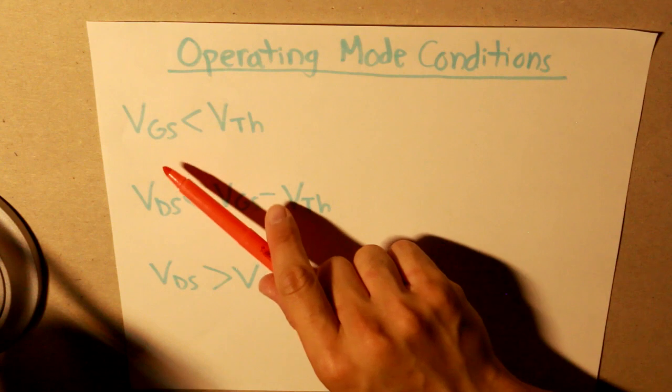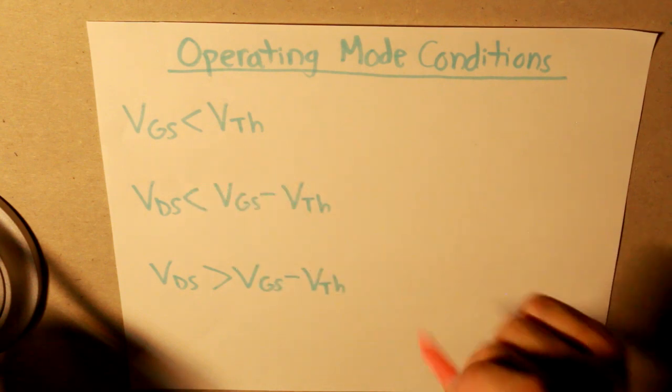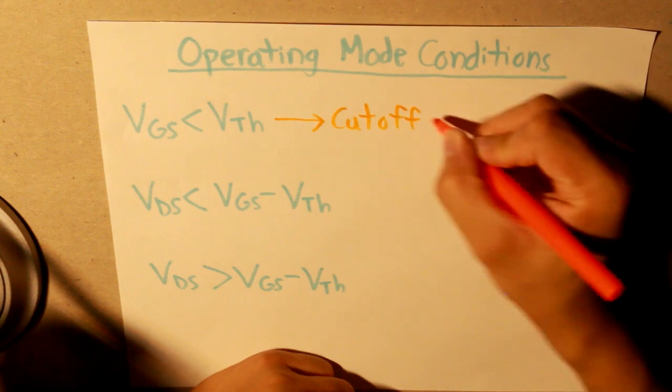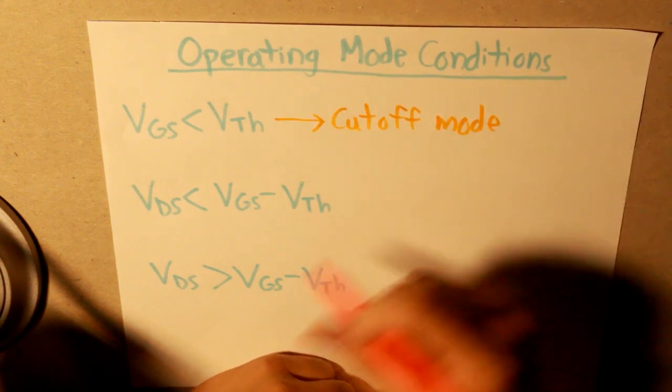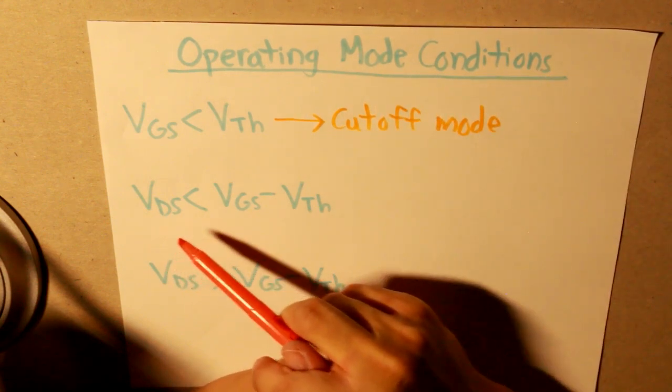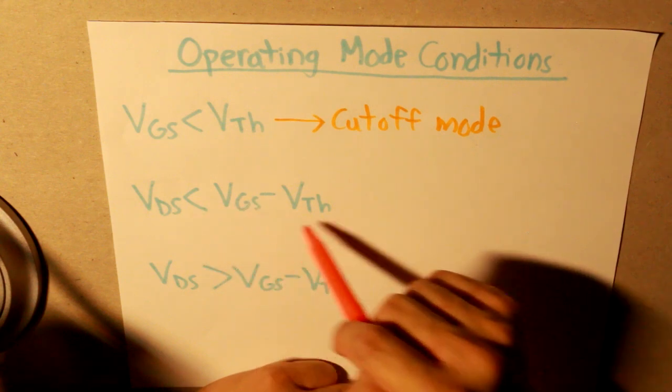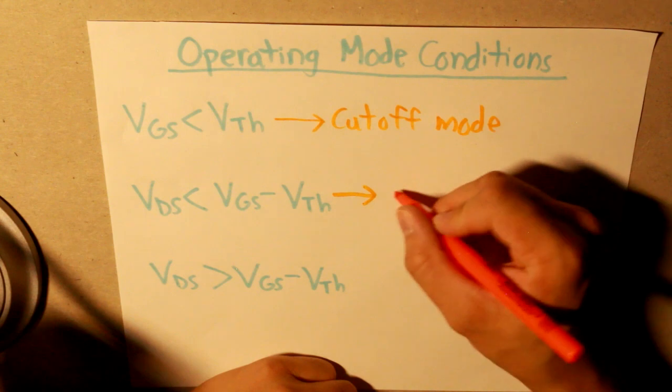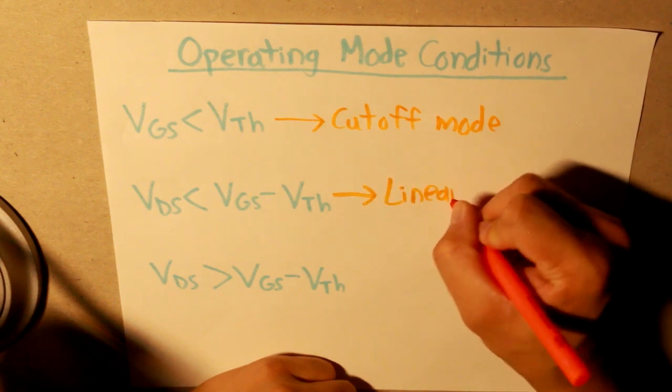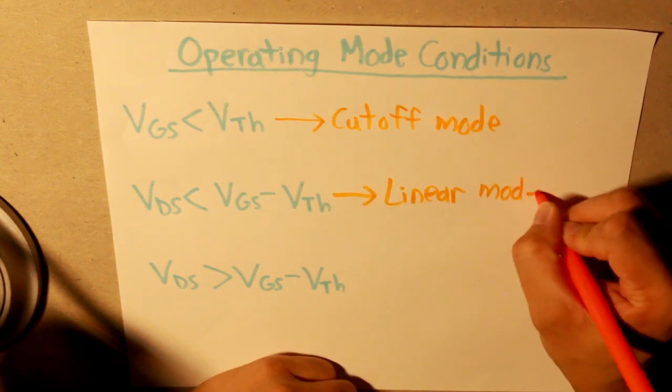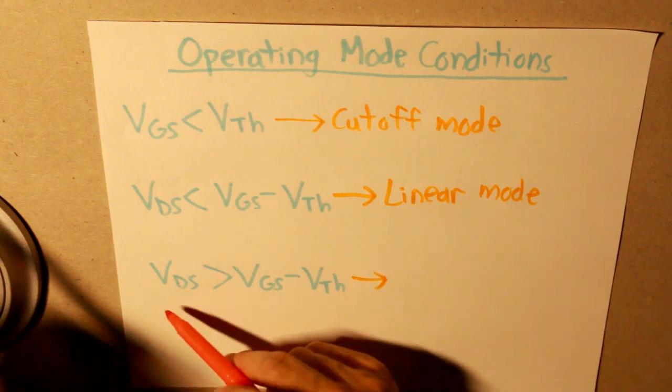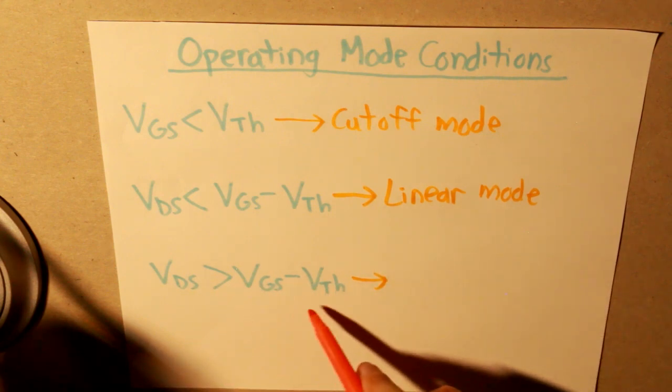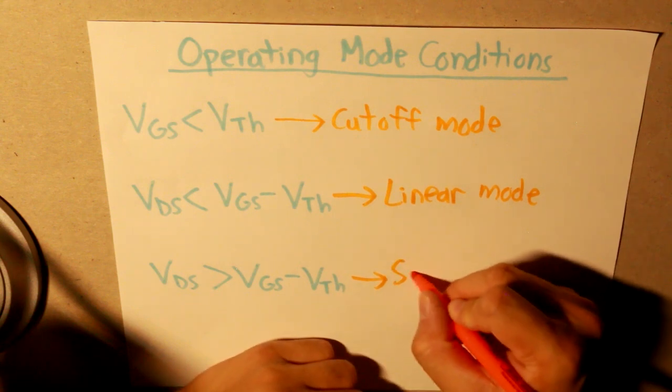And that is where the operating mode conditions are explained. So, if the voltage gate source is below the threshold, that will be the cutoff mode. When the voltage drain source is less than the difference between VGS minus the threshold voltage, that will be the linear mode. And when the voltage drain source is now greater than this difference, then it will be in saturation mode.